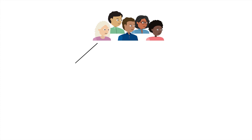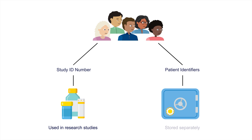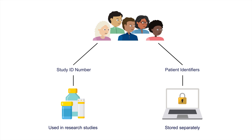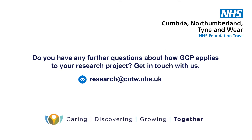Participants should be allocated an ID number so that their data cannot be linked to their identity. Identifiable information should always be stored separately and safely to ensure confidentiality. Do you have any further questions about how GCP applies to your research project? Get in touch with us.